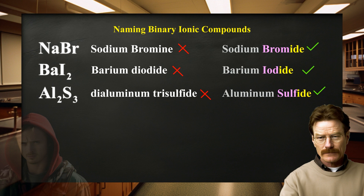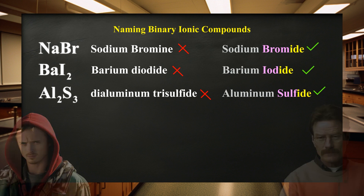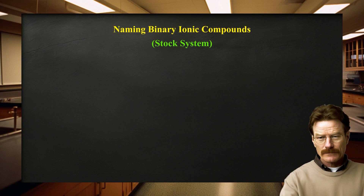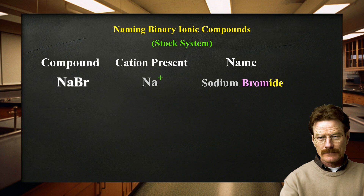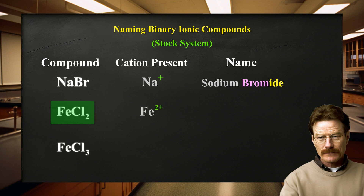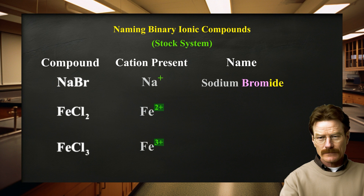Now let's discuss how to name a second type of ionic compound. In the binary ionic compounds considered earlier, the metal present forms only a single type of cation — sodium forms only Na+, calcium forms only Ca2+, and so on. However, there are many metals that form more than one type of positive ion, and thus form more than one type of ionic compound with a given anion. For example, FeCl2 contains Fe2+ ions, and FeCl3 contains Fe3+ ions.